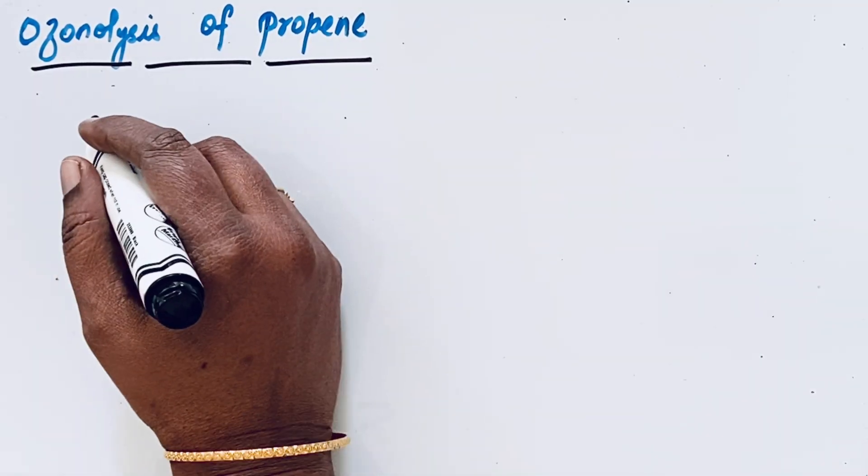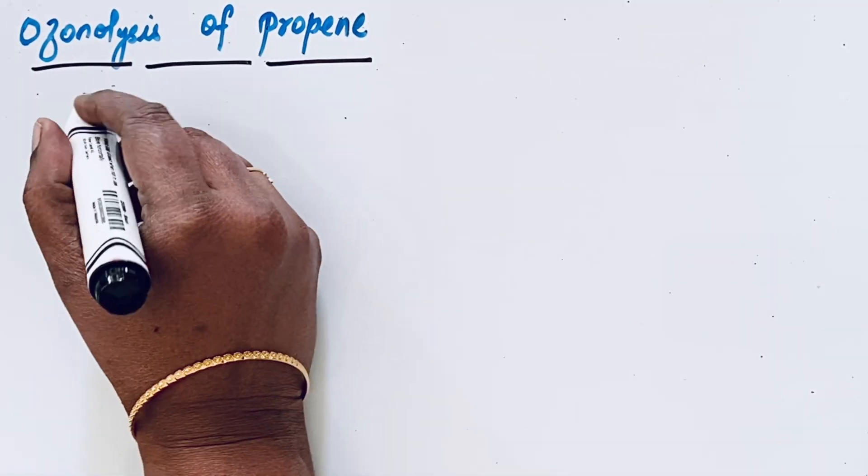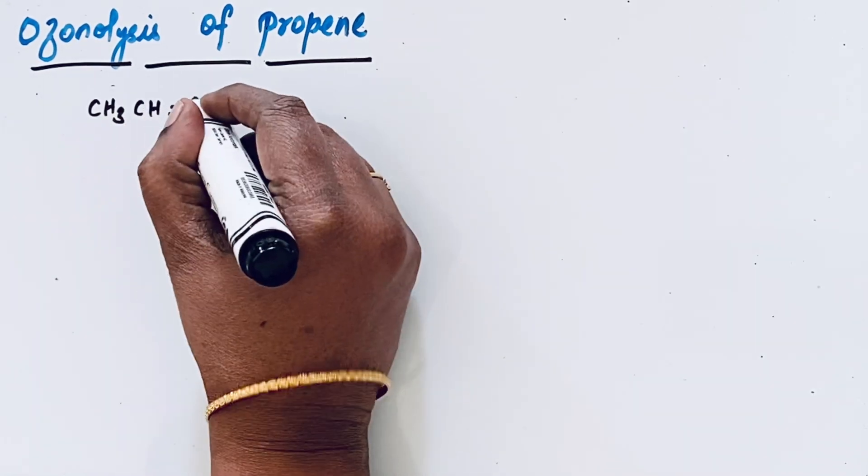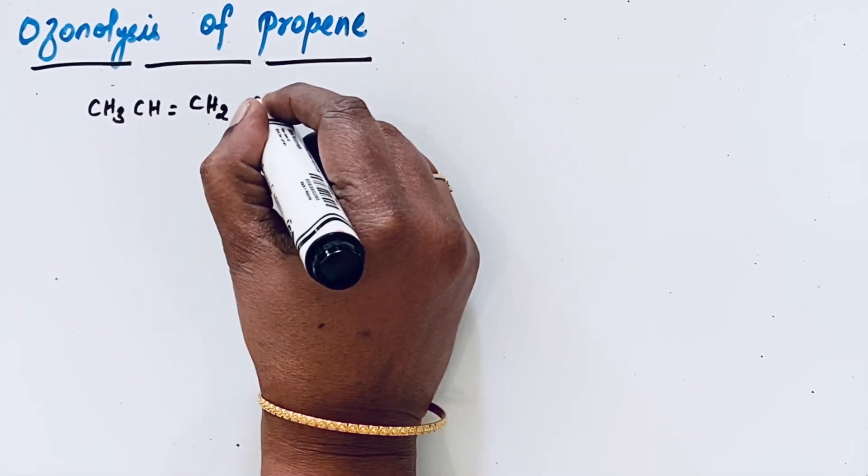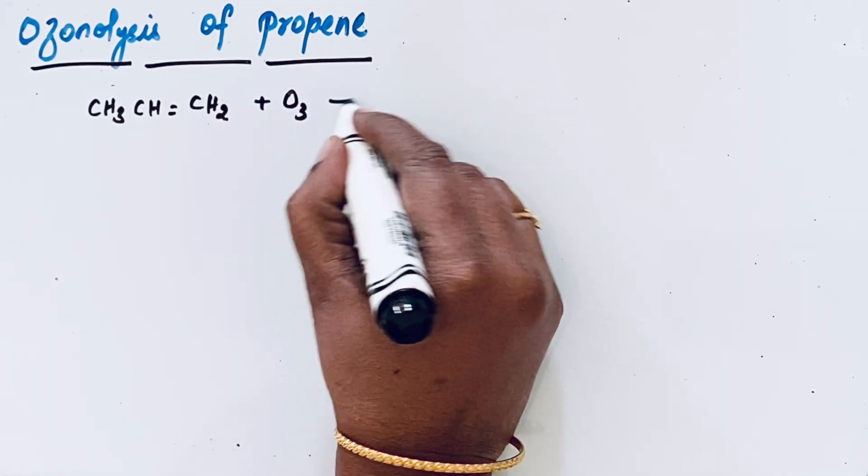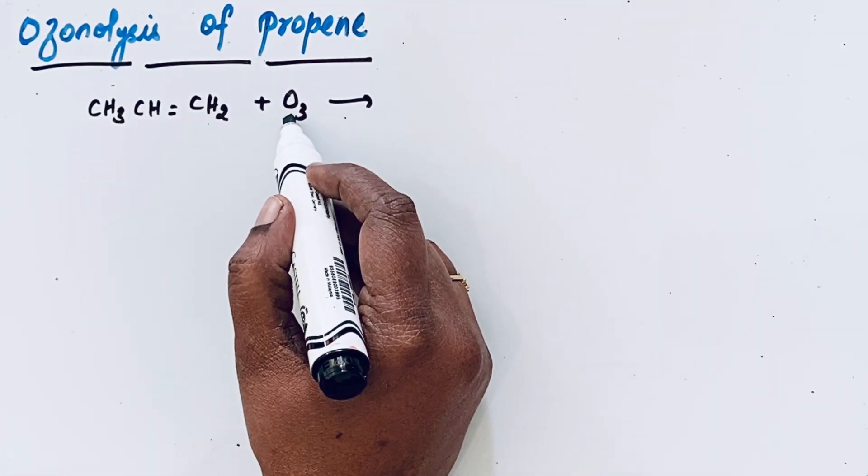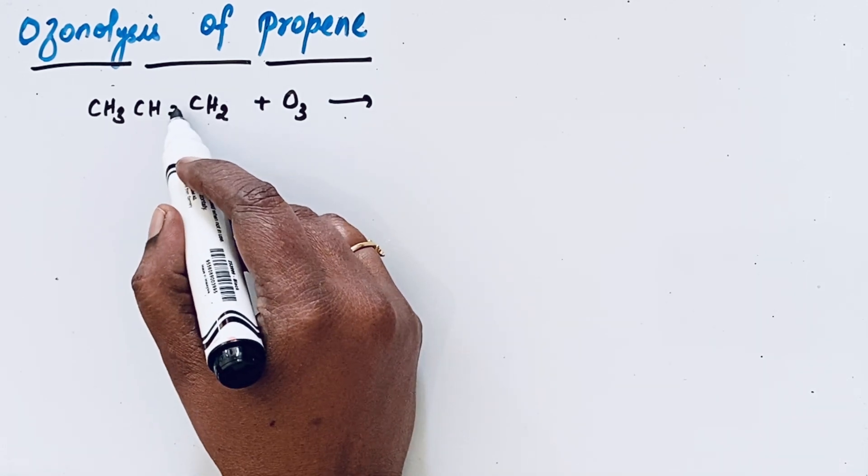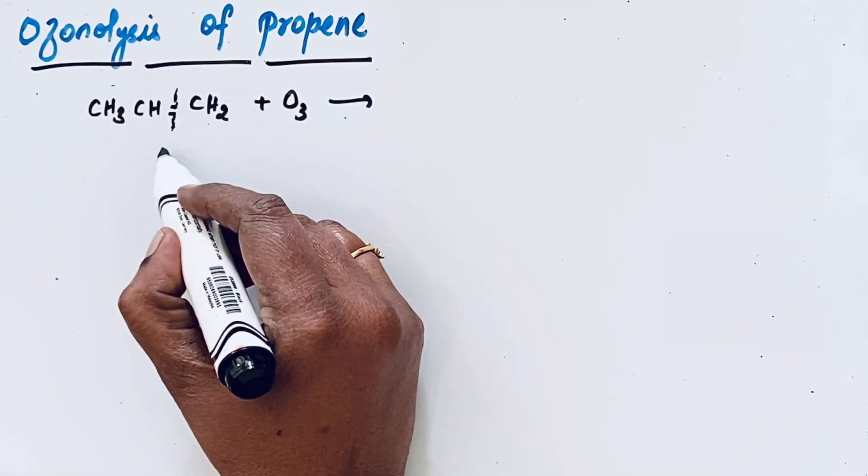Here we have taken propene which contains double bond CH3CH double bond CH2. When it is added to ozone O3 molecule, the O3 molecule takes place in between the unsaturated place. Here it is the unsaturated place.